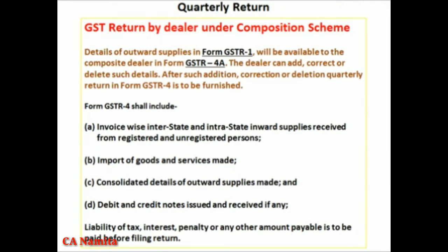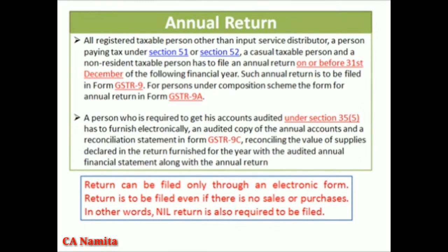Annual return: all registered taxable persons — other than input service distributors, persons paying tax under section 51 or 52, casual taxable persons, and non-resident taxable persons — must file on or before 31st December of the next year. You will file the annual return in GSTR9. If you are under the composition scheme, you will file in GSTR9A. If you are subject to audit, you will file in GSTR9C.